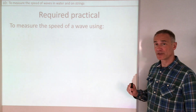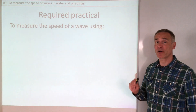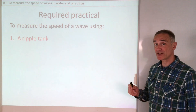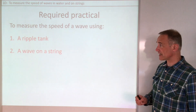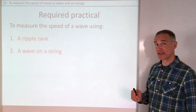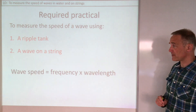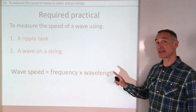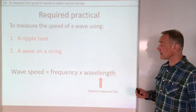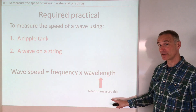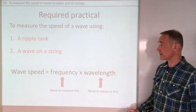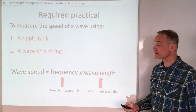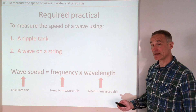Today we look at two required practicals to measure the speeds of waves: one using a ripple tank and the second using waves on strings. For both experiments we need to use the equation wave speed equals frequency times wavelength. The key is we need to measure the wavelength, measure the frequency, and once we've measured both we can calculate the speed.